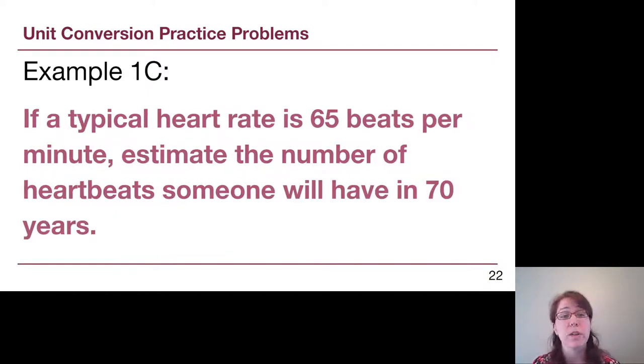This third example: if a typical heart rate is 65 beats per minute, estimate the number of heartbeats someone will have in 70 years. We will talk about here how 70 years is our starting point, and 65 beats per minute, although it feels like a rate, can also be written as a conversion factor. One minute of time is equal to 65 heartbeats, and we can use that as a conversion factor instead of a starting point.